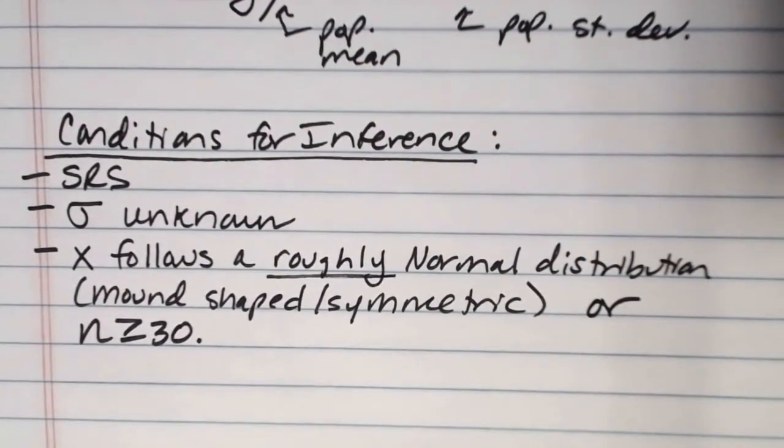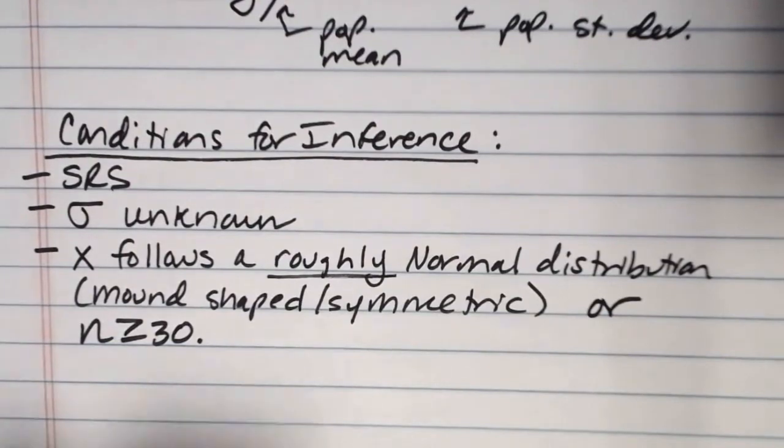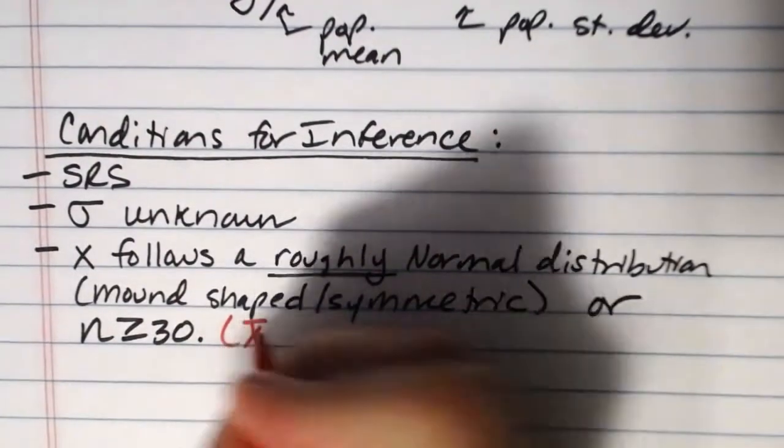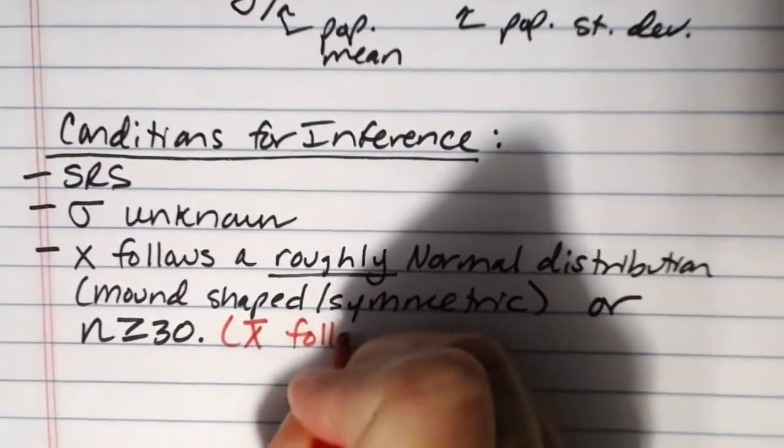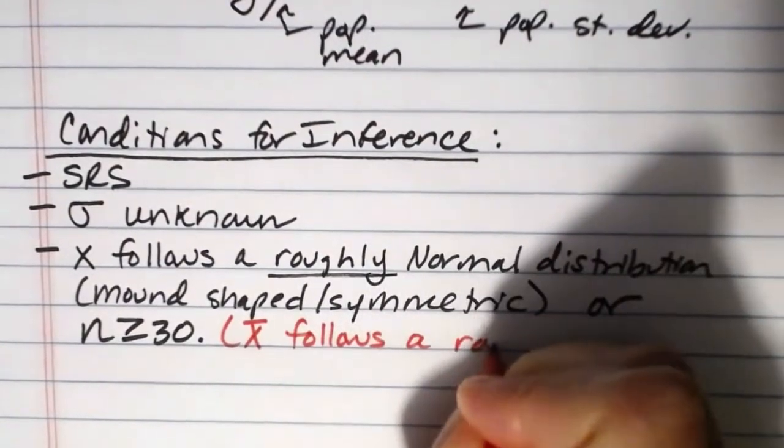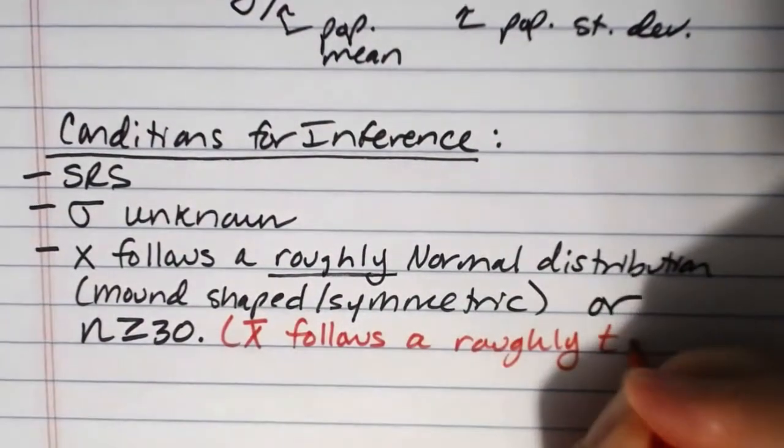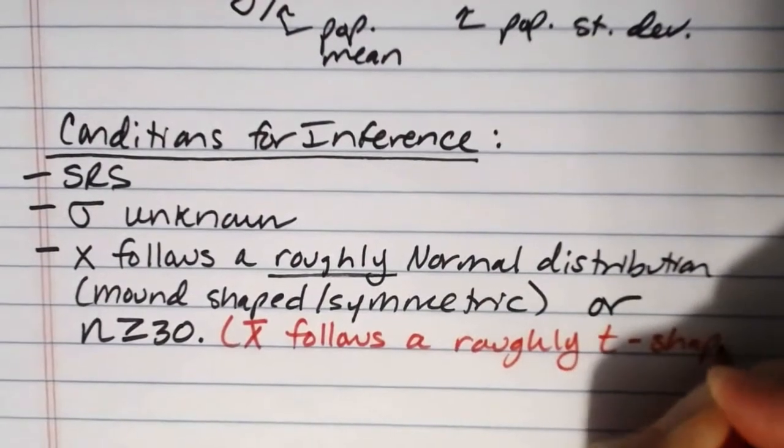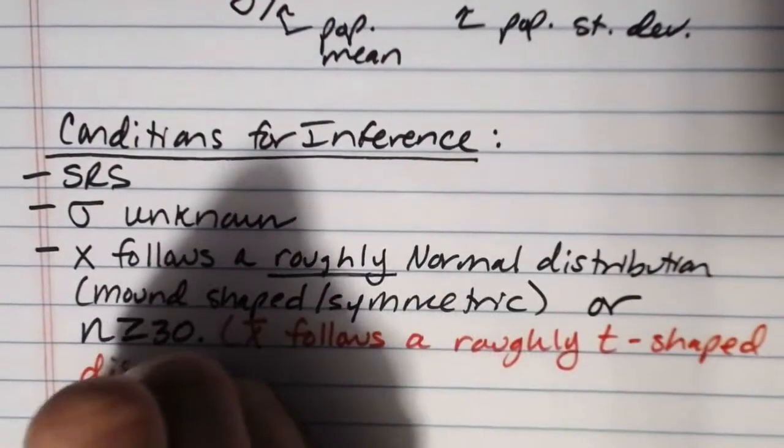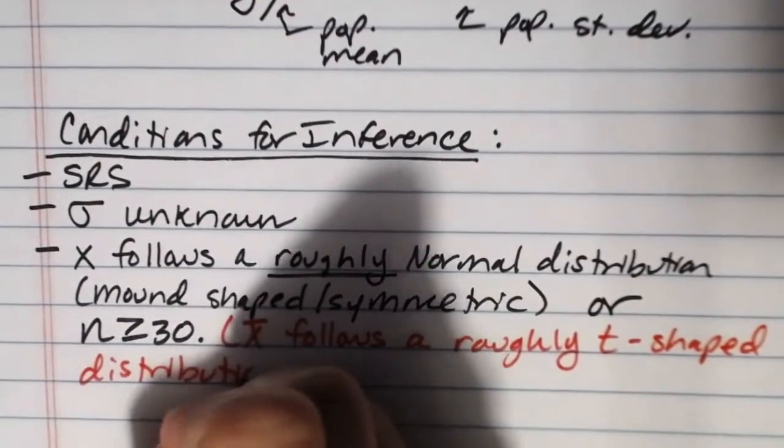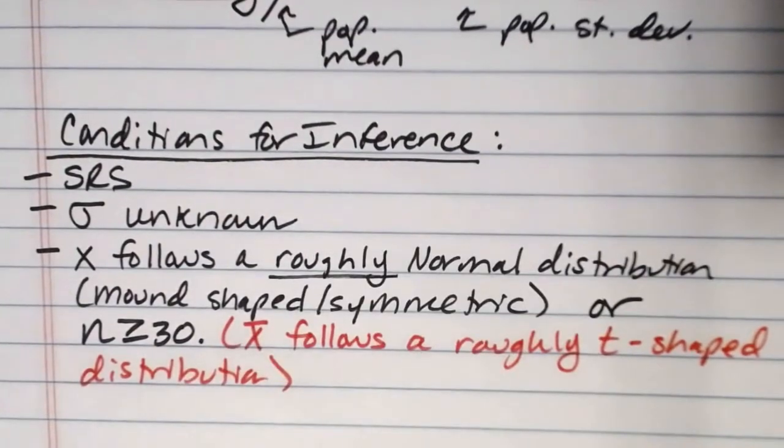And again the whole point of this criteria is to ensure that x bar follows a roughly t-shaped distribution rather than the normal here. Because again the calculations that we're going to use here are based on something called the student's t distribution rather than the normal distribution.